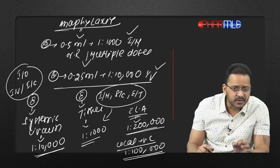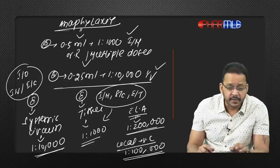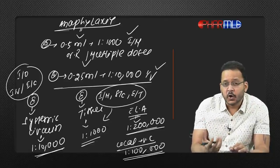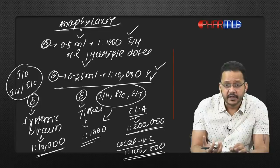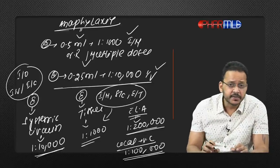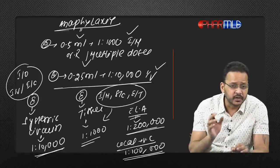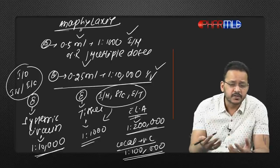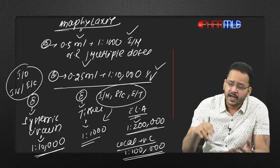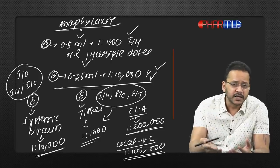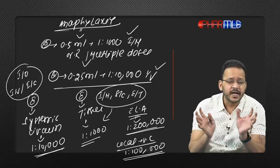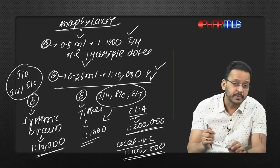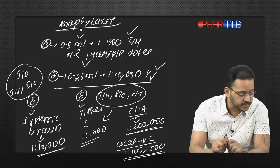Corticosteroids and antihistamines form part of the regimen but are not life-saving drugs as such. The life-saving drug is epinephrine. When a patient comes with anaphylaxis, your first role is to immediately give epinephrine. After that you can start antihistamines and corticosteroids — they have a supporting role, but the main life-saving drug is epinephrine.